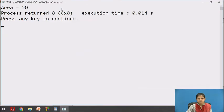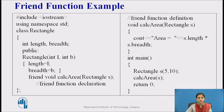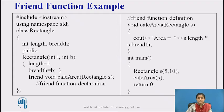The output is: area is 50. Although there is nothing gained by making calc_area a friend rather than a member function of the rectangle class in this example, there are circumstances where friend functions are quite valuable. Friend functions can be useful when overloading certain types of operators, make the creation of some types of I/O functions easier, and may be desirable when two or more classes contain data members that are interrelated relative to other parts of the program.